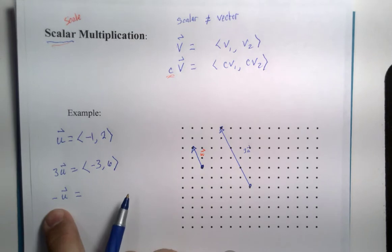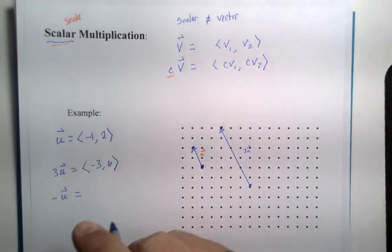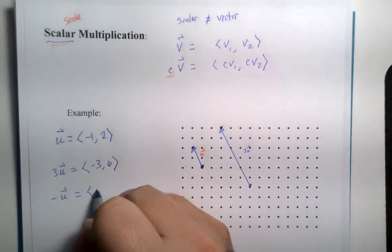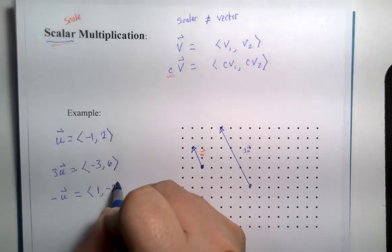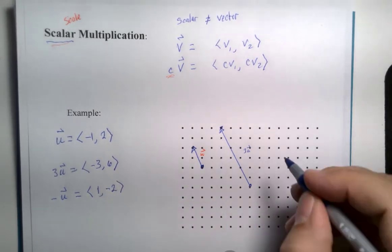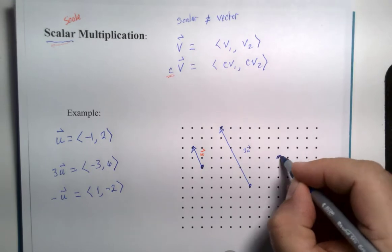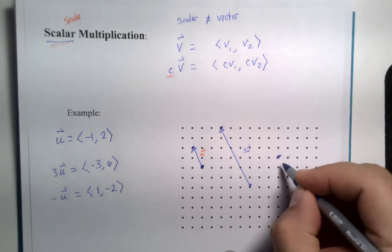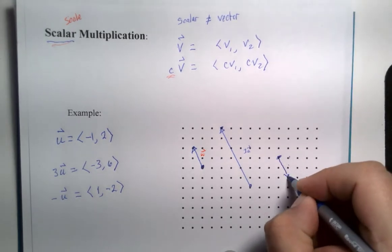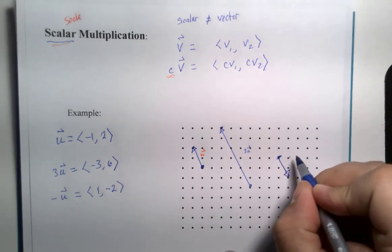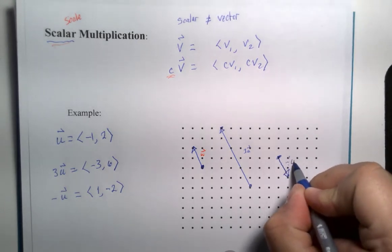Let's look at one more scalar multiplication and then we'll do a magnitude comparison. Negative of a vector would be to multiply by negative one, the components. So that would be positive one and negative two. And if I started here and go positive one and down two, that would be this vector. So that would be negative u.